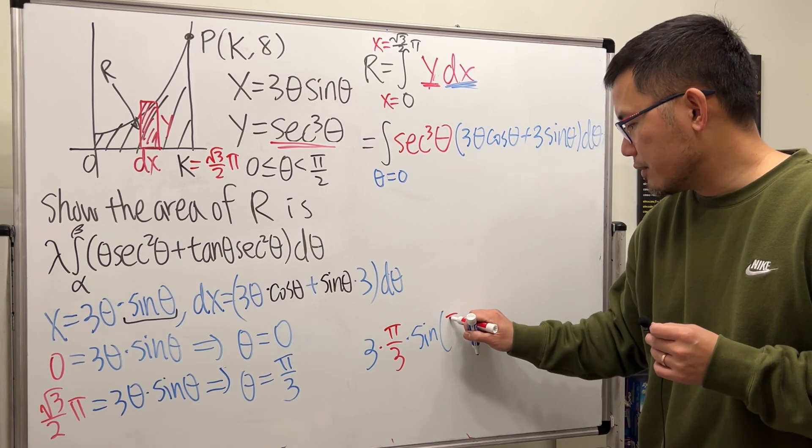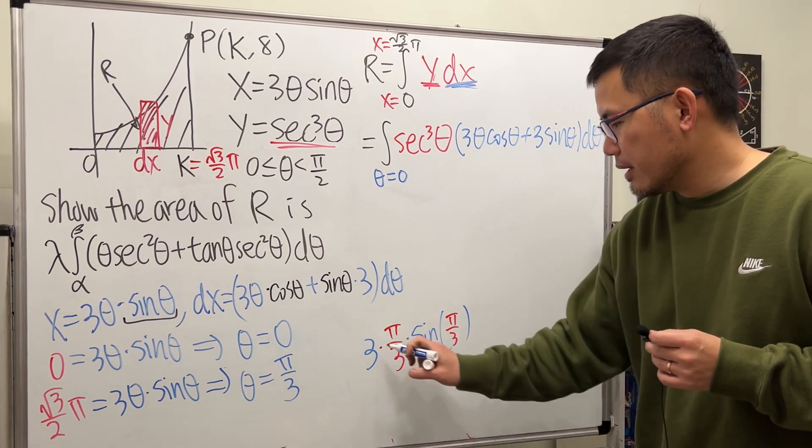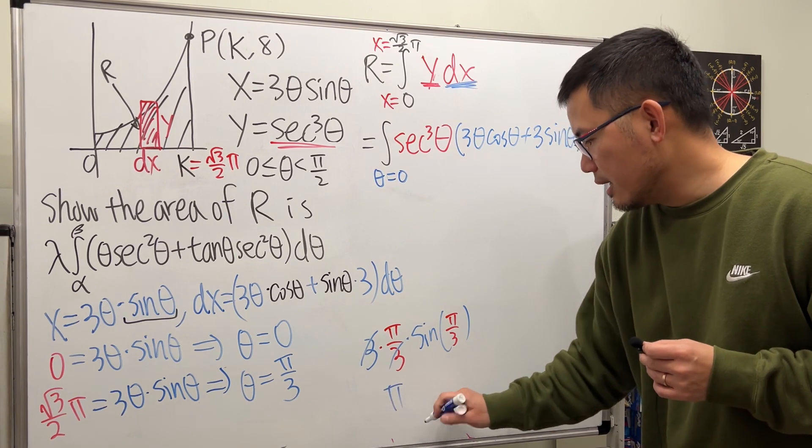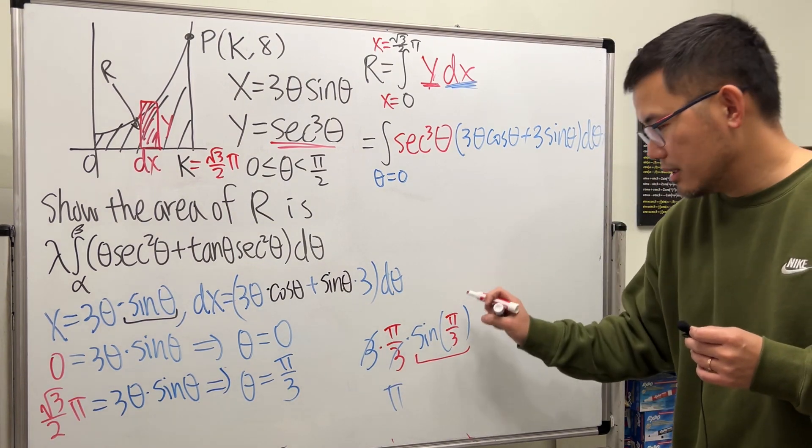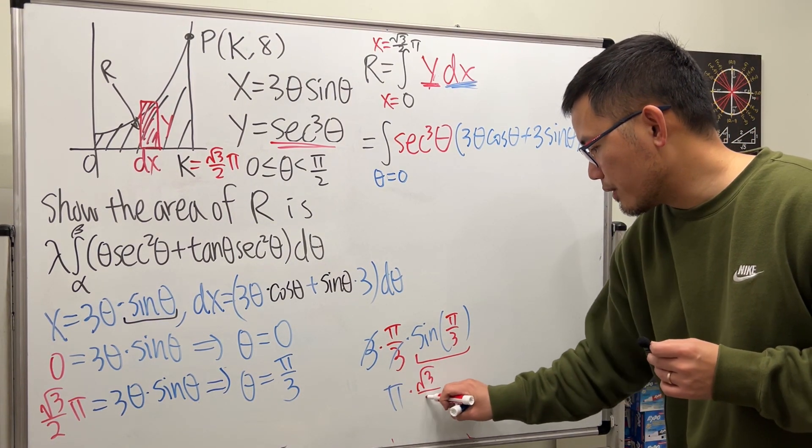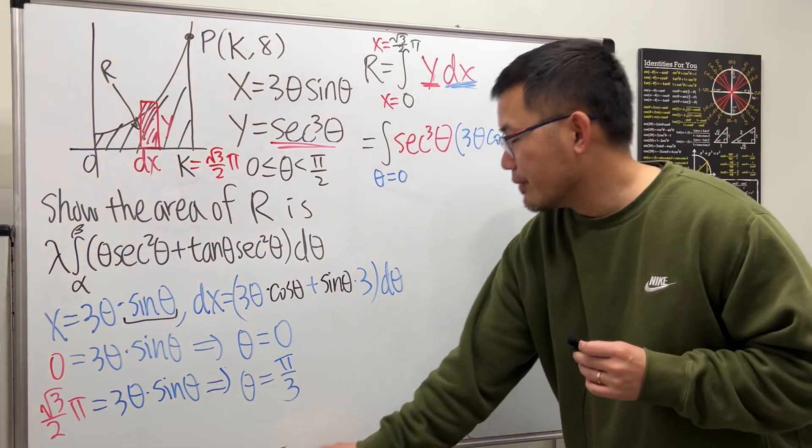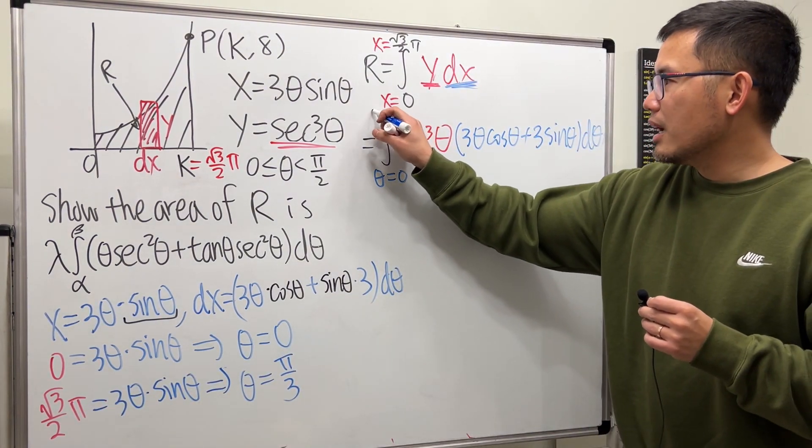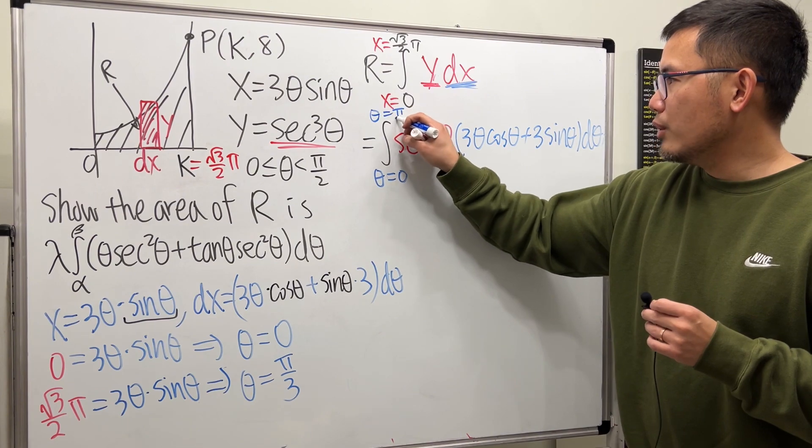If you have 3 times π/3 times sine of π/3, this and that cancel, we just get π. And what's this? This is √3/2, which is that. So I will come here and say θ equals π/3.